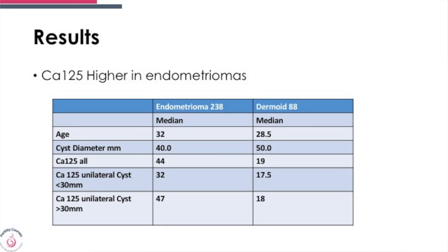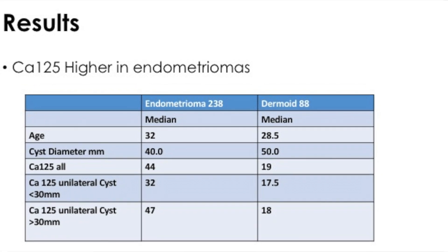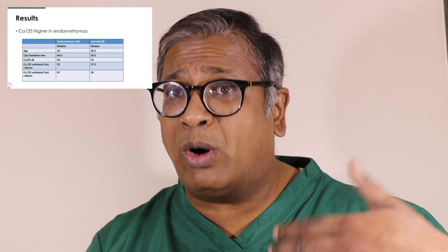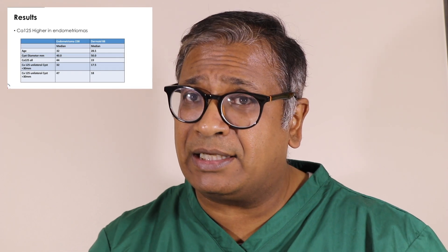Let's look at what the CA125 showed. CA125 was higher in endometriomas, and as the cyst increased in size, the CA125 also increased, indicating an inflammatory process. With dermoids, CA125 levels were not extensively high — in fact, they were lower.